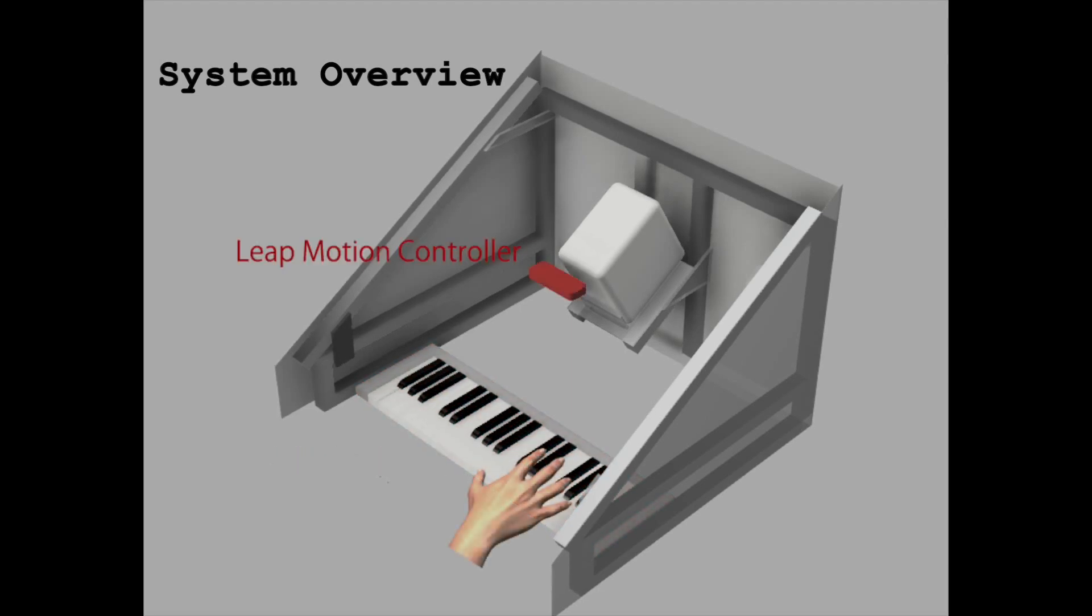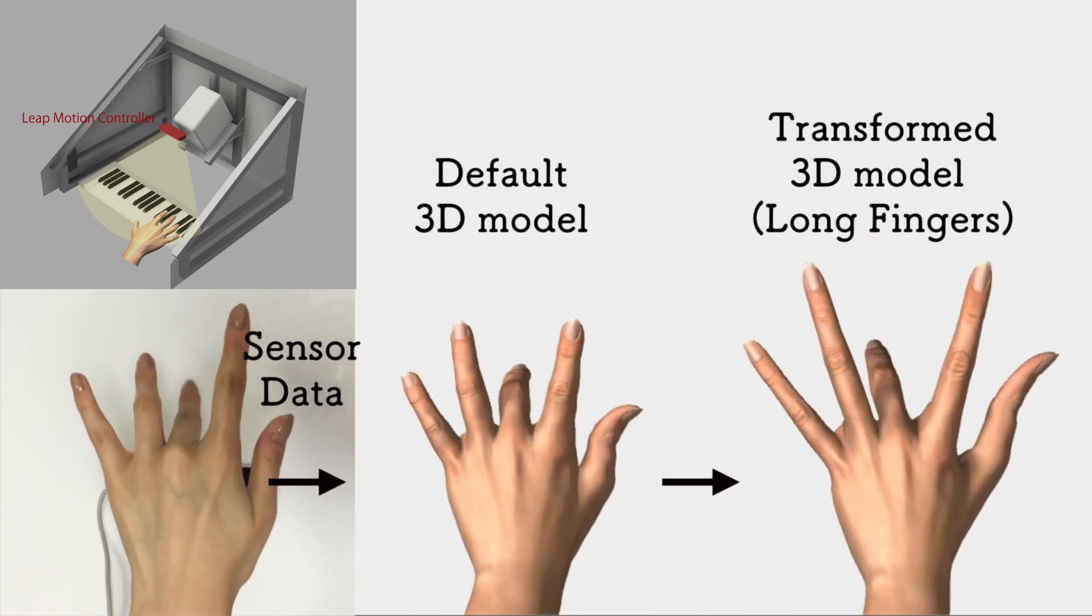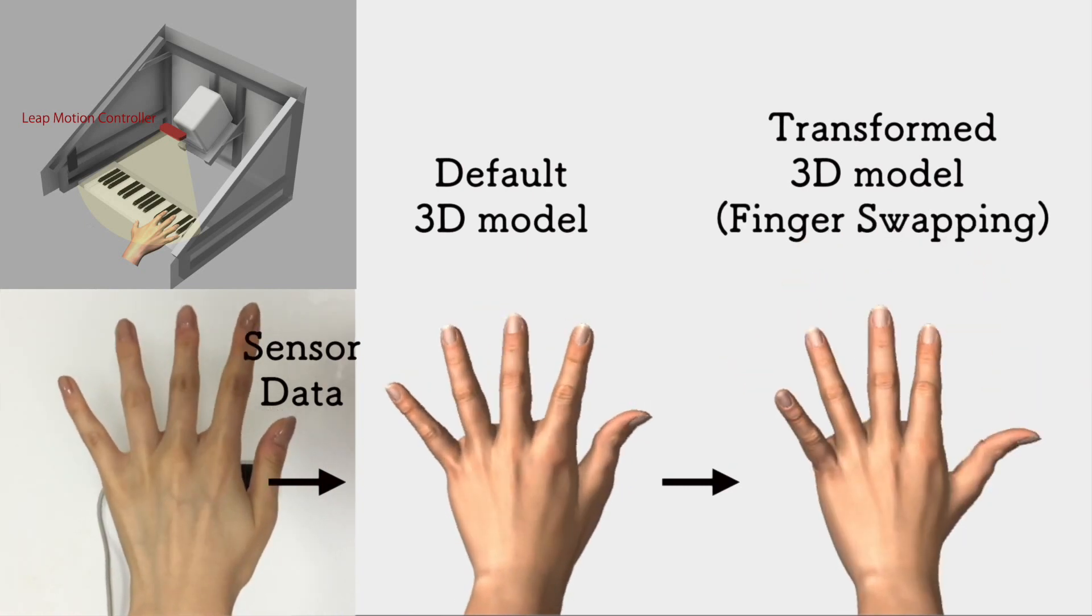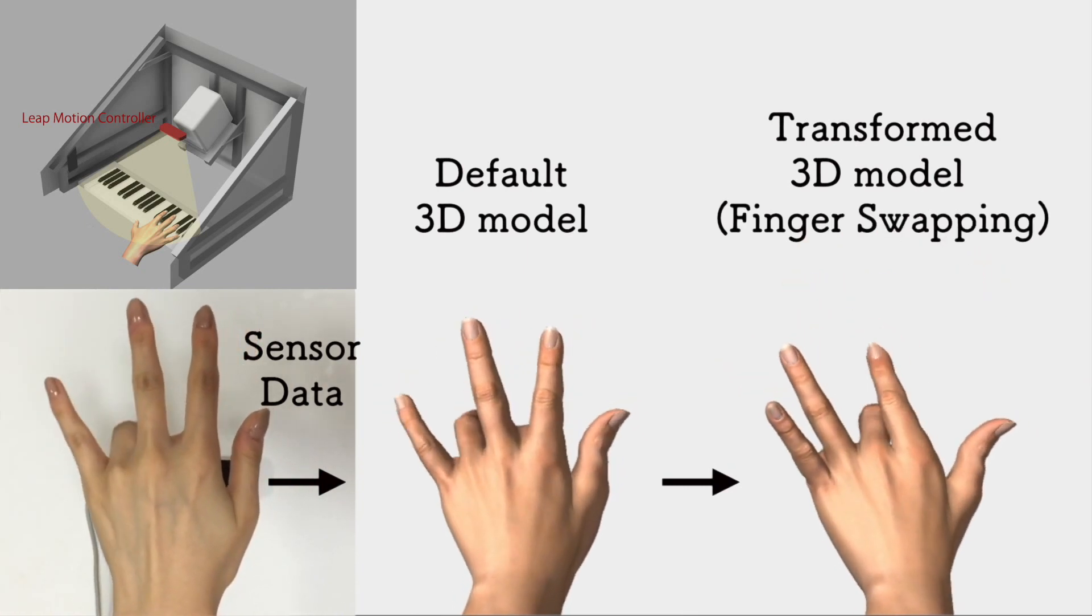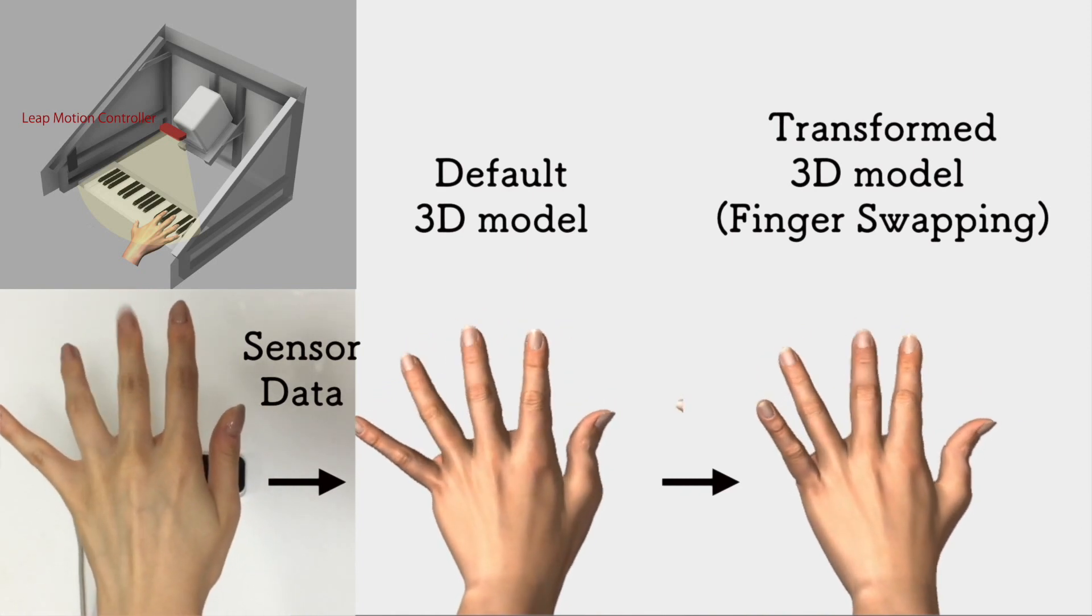When you put your fingers on the keyboard, the Leap Motion controller senses your hand positions and finger movements. Then it renders CG hand models based on the sensor data. It can naturally transform into various types of hands because it uses CG techniques, not image processing.